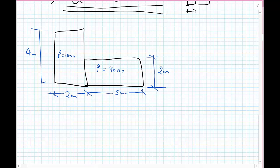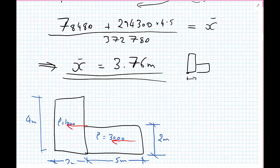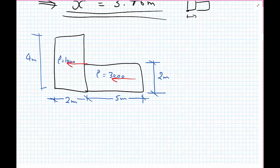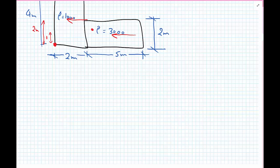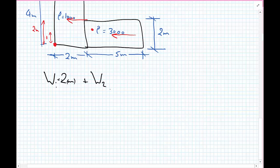We're going to do exactly the same procedure but we're going to consider our weights acting in the vertical direction to find y-bar. Taking moments about this bottom point, we have W1 multiplied by H1 over two, which is two meters, plus W2 multiplied by H2 over two, which is one meter, must be equal to the total weight multiplied by the distance to where the total weight would be acting — that is y-bar.